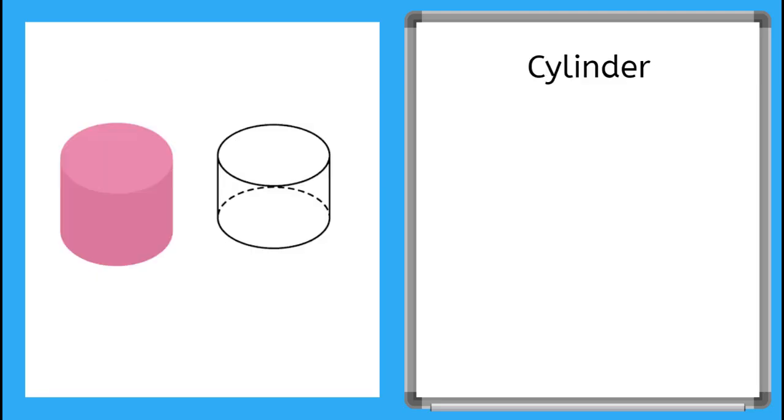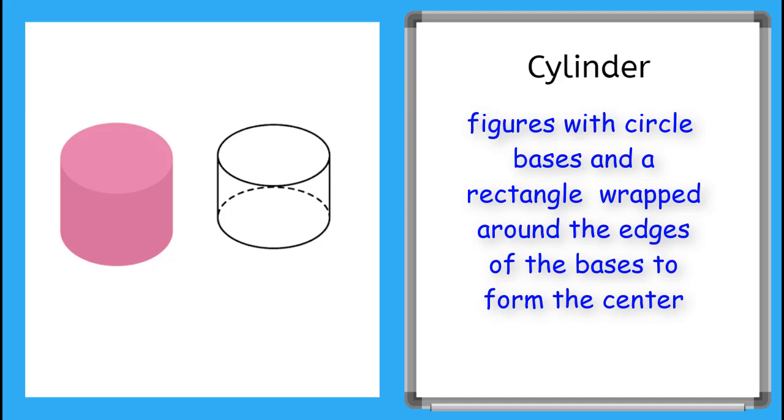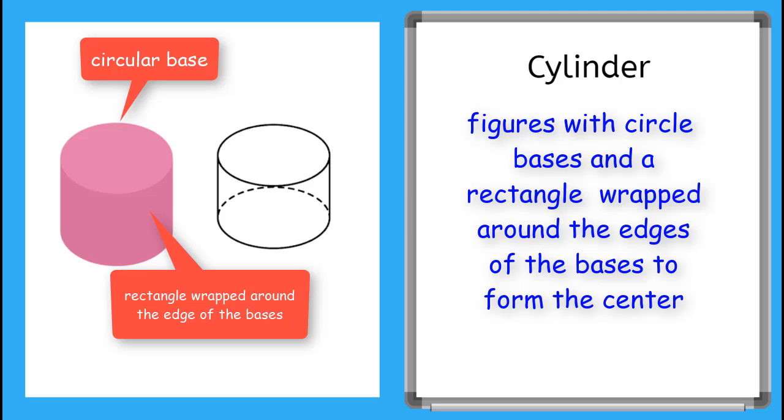We also have solid figures called cylinders. Cylinders have bases that are circles. A rectangle is wrapped around the edges of the bases to form the center. Can you think of a time in your life you've seen a cylinder? Yeah, like a soup can. Those are cylinders.